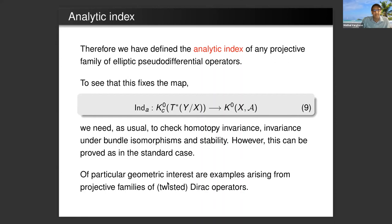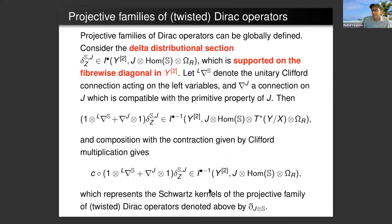A particular case of interest arises from projective families of twisted Dirac operators. One of the things about projective index theory is that it's awkward to define the operators themselves, but it's more natural to define the Schwartz kernels. I'll define projective families Dirac operators in terms of the distributional kernels. You take a Dirac delta distributional section over the fiber product of Y with itself, and this is supported on the fiberwise diagonal.